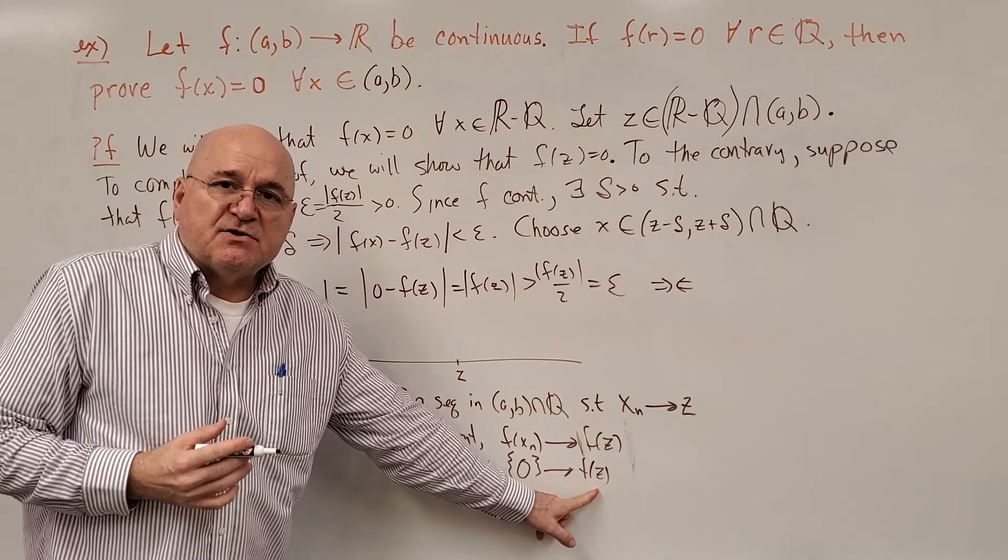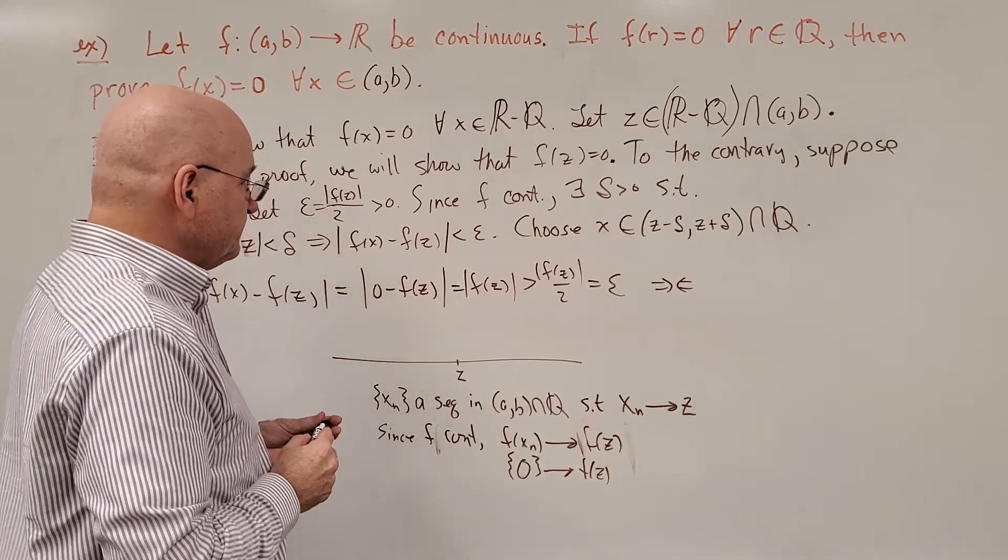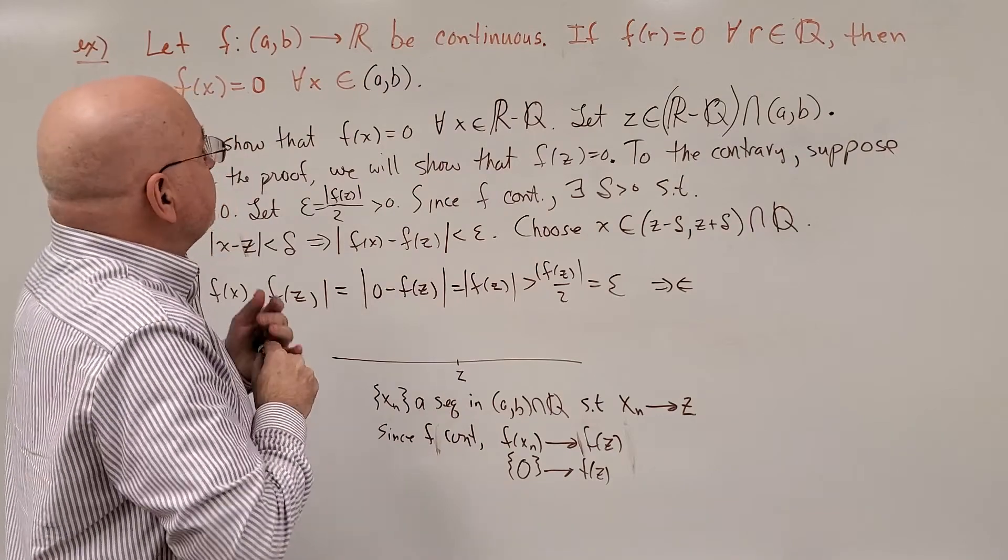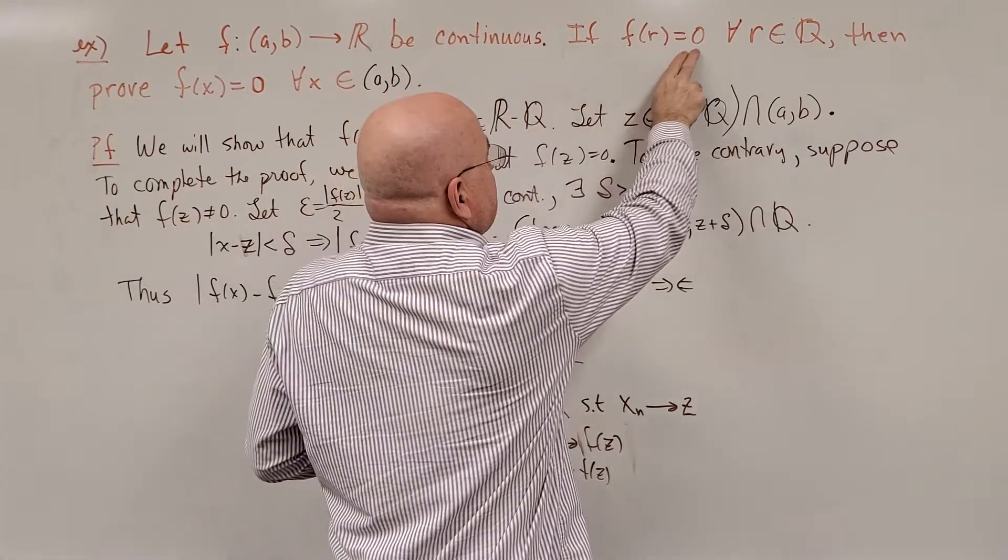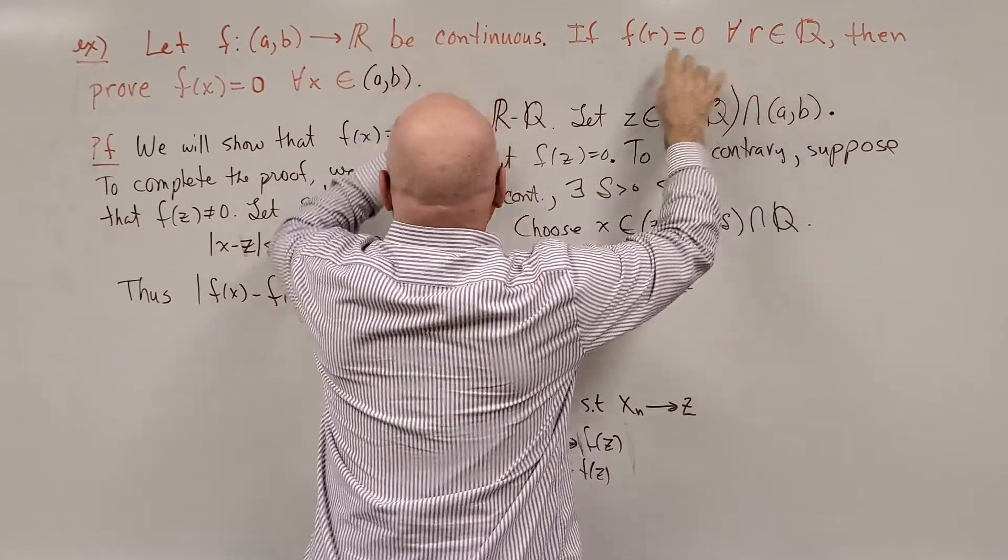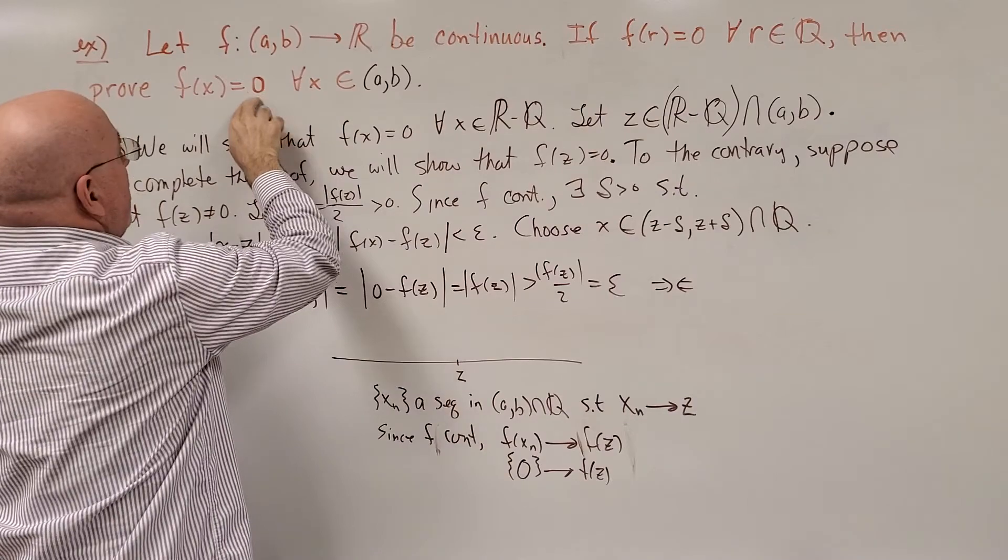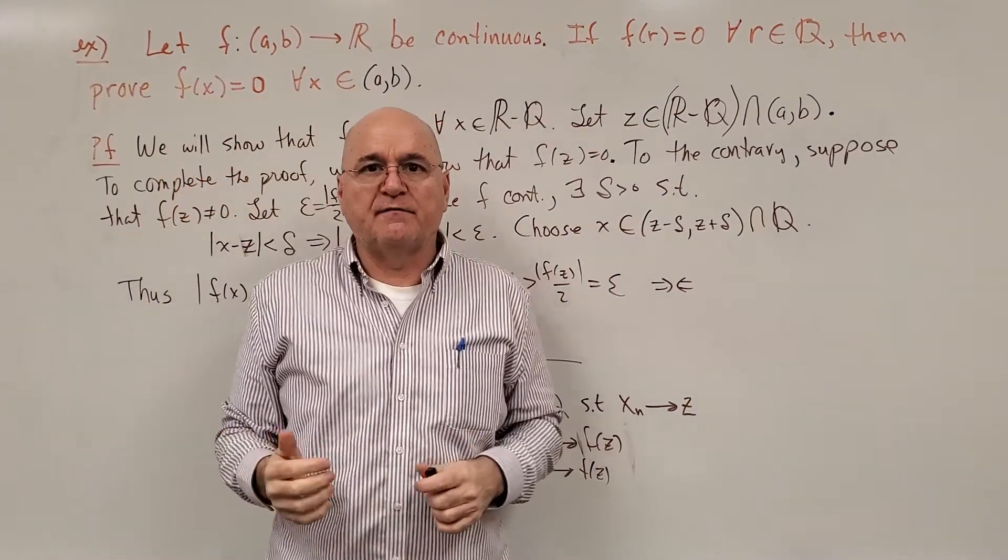So it may be even easier to see this just by using sequences. So two different approaches to prove that if f(r) = 0 for all the rationals and f is continuous, that means f(x) is always zero for the rationals and irrationals, or all of the reals.